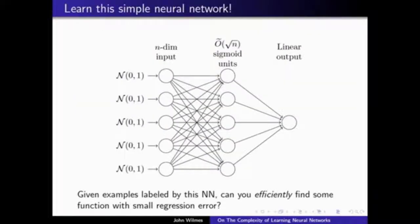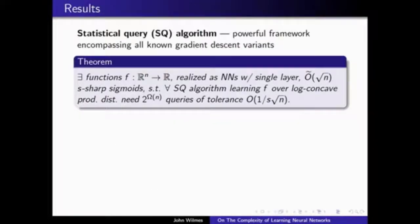These are functions represented over such a nice input distribution — or indeed over your choice of log-concave product distribution. You need an exponential number of queries, corresponding to exponentially many steps of gradient descent, even when the query tolerance is small enough that you would need more labeled examples than there are parameters in your network to get a single such query. To learn more about the statistical query framework, how we prove this result, and what it means, come by our poster at poster number 206 tonight. Thank you.